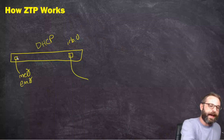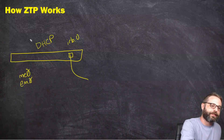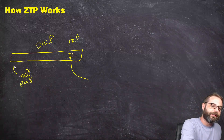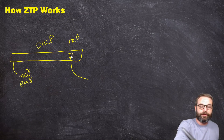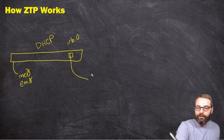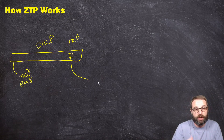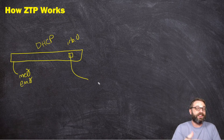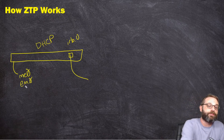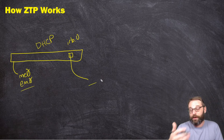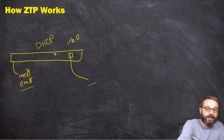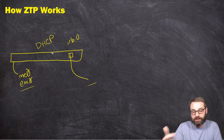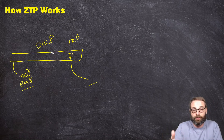On the back of the switch we have the management side, and on the front of the switch we've got our access ports. As long as these are plugged in in some way to where they can actually reach the DHCP server, one of these interfaces is going to get an IP address. From there, it can begin to perform the zero-touch provisioning operations.